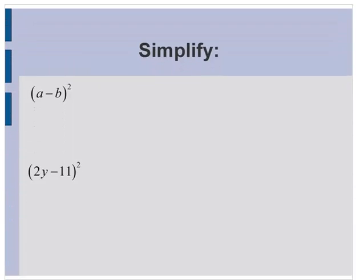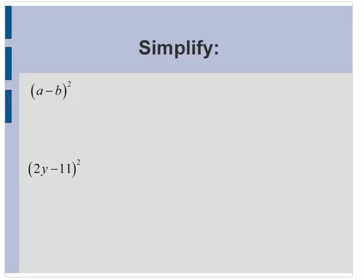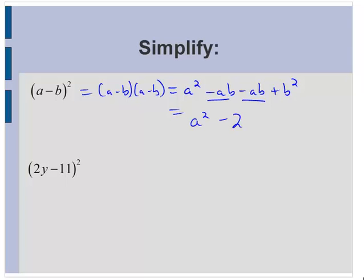Now, what if there's a subtraction in there? What if it's a minus b squared? Well, that would still mean a minus b times a minus b. Multiplying it out, we'd have a squared. Outers give you minus ab. Inners give you another minus ab. And the lasts will give you plus b squared. Again, these middle terms do not cancel. They're both negative, so they would add up, and there would be two of them. So I'd have a squared minus 2ab plus b squared.